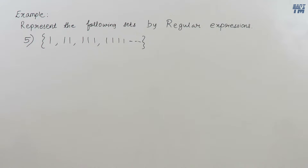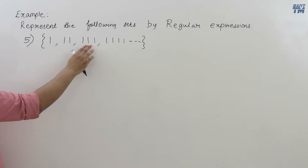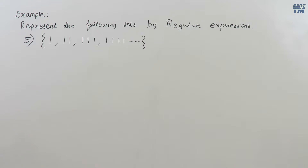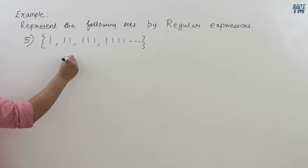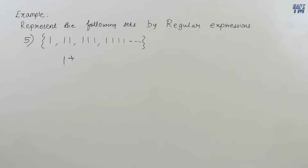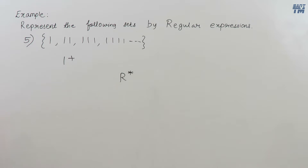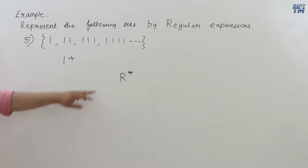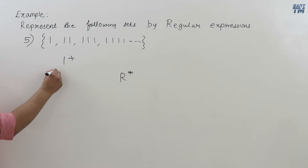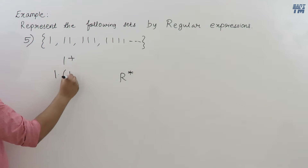Now consider a set consisting of strings of all 1s with no null string — that is 1, 11, 111, and so on. This is the positive closure of 1 (written 1+). Since in regular expressions we use the Kleene closure (star), we represent 1+ as 1 concatenated with 1*, because 1* gives null, 1, 11, 111, and concatenating 1 with each element produces 1, 11, 111, 1111 — which is exactly our set.